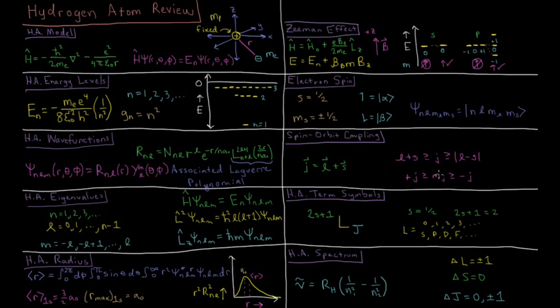m sub j, the component of j along the z-axis, varies from plus j to minus j by integer values in between.